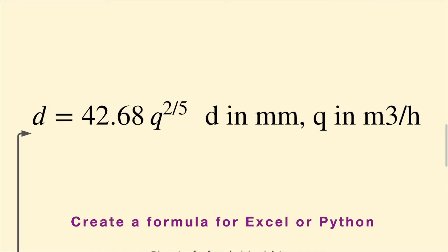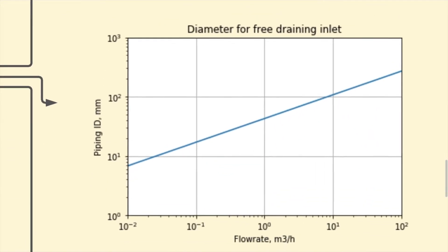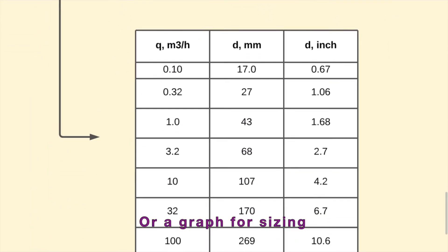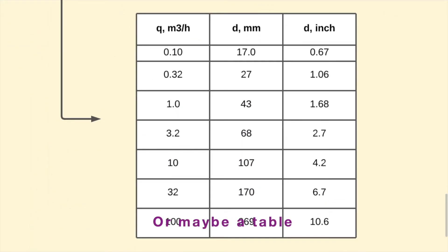We could create a simple formula for line sizing, perhaps in a spreadsheet or in a Jupyter notebook using Python code. We could create a graph, or we could create a table to show the line size needed for the free draining condition at a given flow rate.